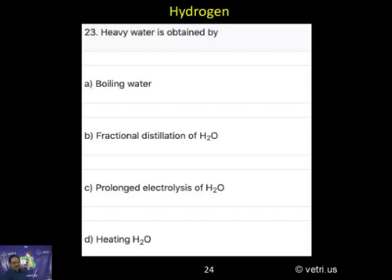Heavy water is obtained by - very important question. How we are obtaining it? Boiling water, fractional distillation of water, prolonged electrolysis of water, heating of water.